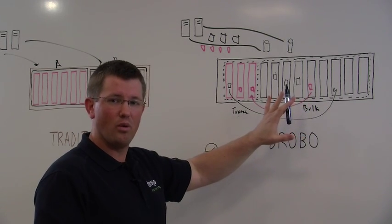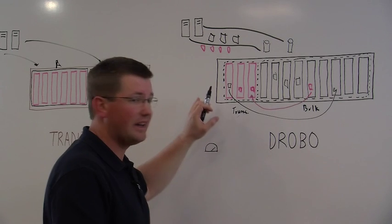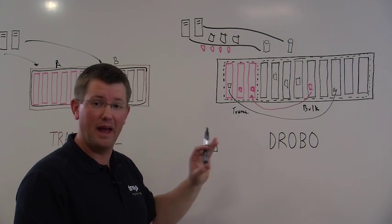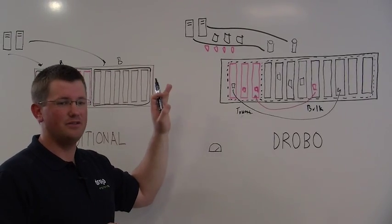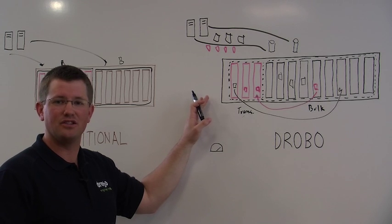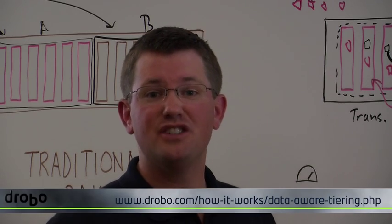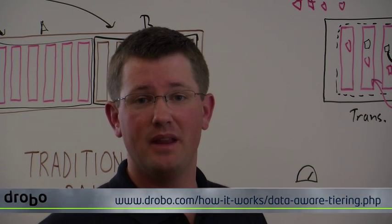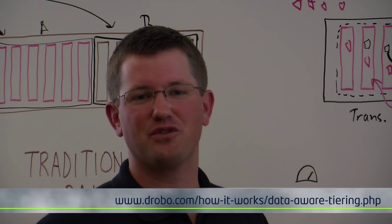Everything about the way that Drobo works with automated data-aware tiering is very automatic. This technology is first available in the Drobo B1200i, our 12-bay iSCSI storage array. With Drobo it's very easy to use, it's very affordable, and it really is the first time SSDs are usable by small and medium business IT. To learn more, please visit drobo.com. You can click on the How It Works section of our website, and you can learn more about automated data-aware tiering and other innovative Drobo technologies.